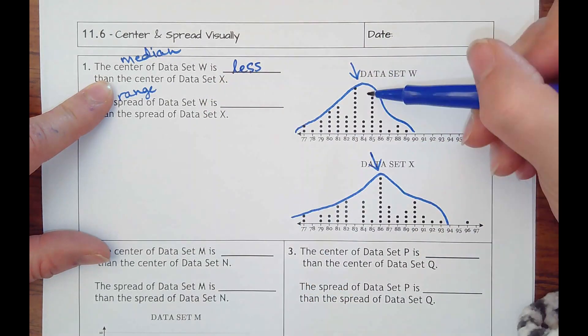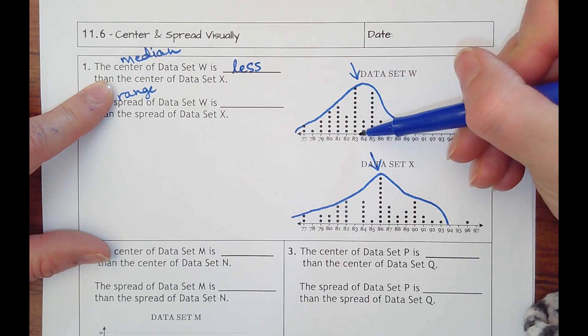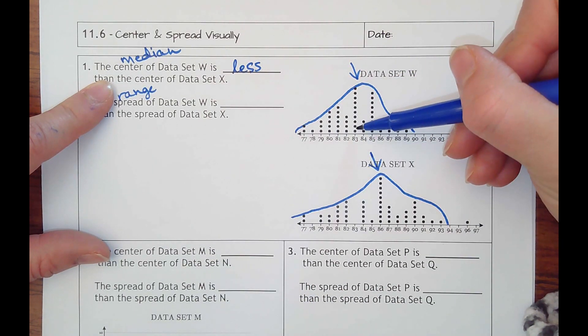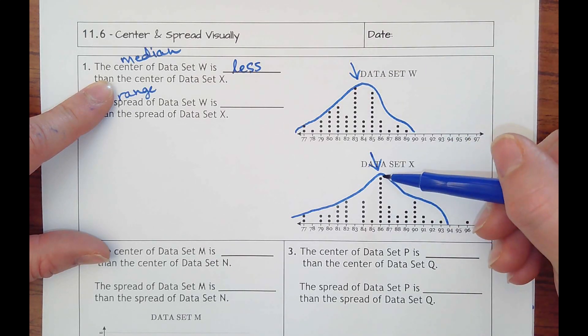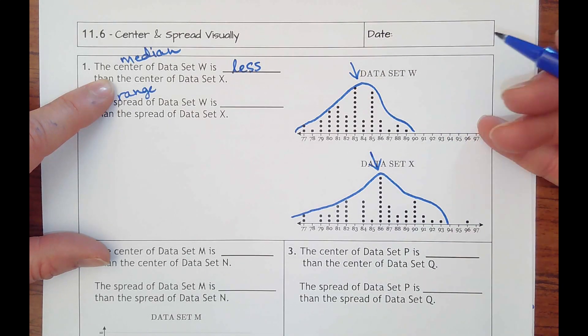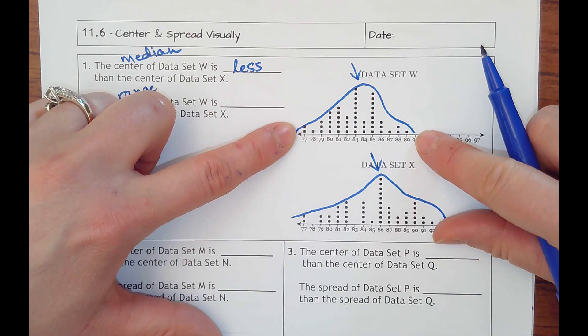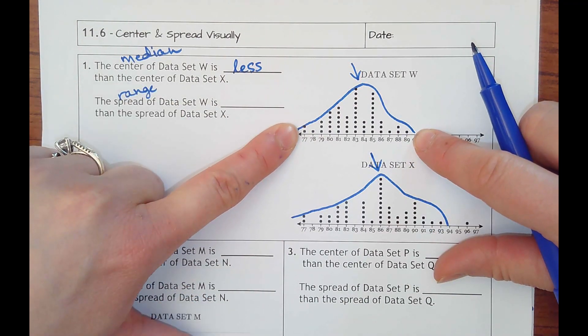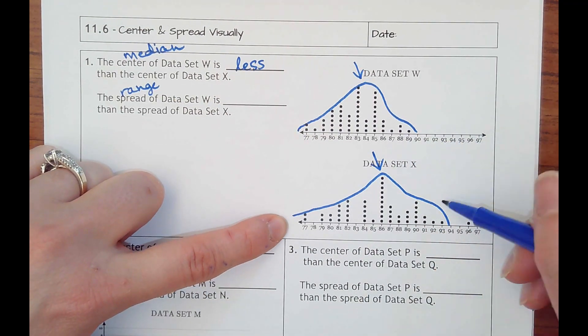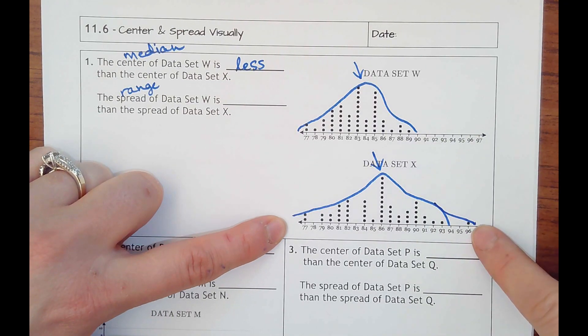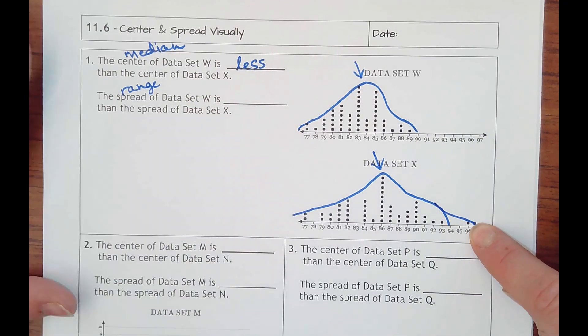It's less because I see its center is around 83, 84-ish here in the center, whereas this one's like 86. And then the spread, I can see how wide my bell curve goes. It looks like it's also less. Oh, I should have even gone over this - less spread than what data X was.